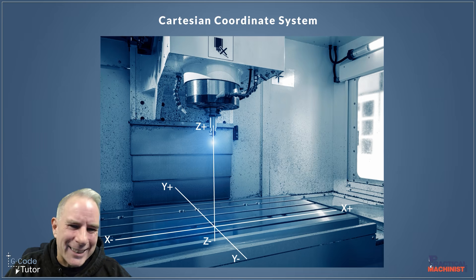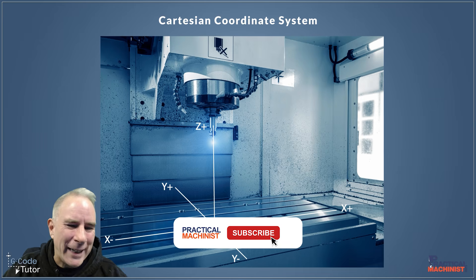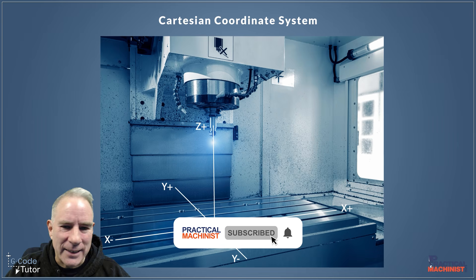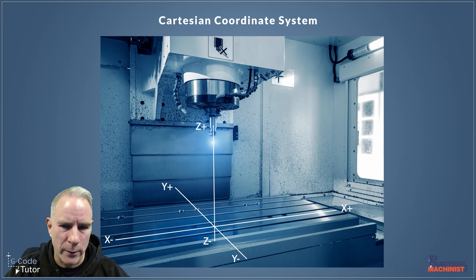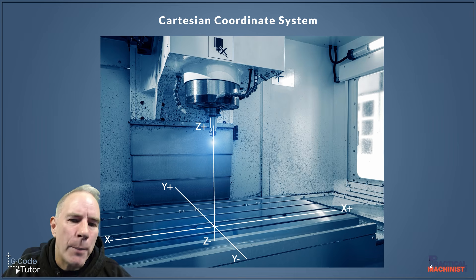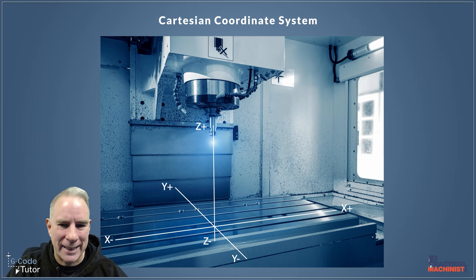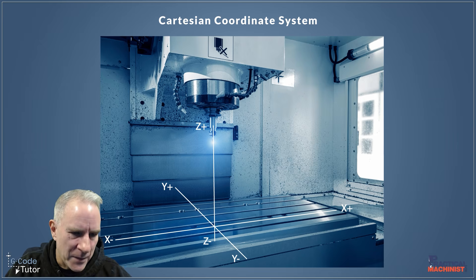Let's take a look at the Cartesian coordinate system — I mentioned this briefly in the last one. This is the way the axes are set in our machine usually. On a horizontal mill they may change, but this is generally the axes we tend to see on CNC machines, where Y minus, X minus, and Z minus come down to the bottom left corner.